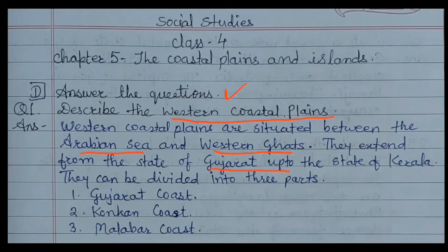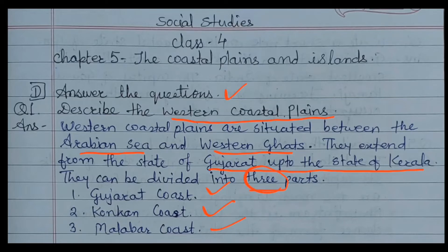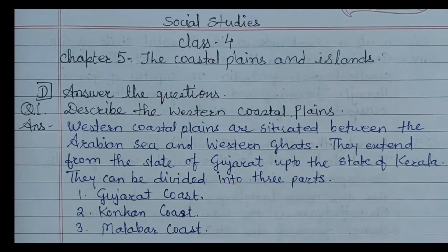The western coastal plains extend from Gujarat up to Kerala and can be divided into three parts: the Gujarat coast, the Konkan coast, and the Malabar coast. The Gujarat coast lies in Gujarat. The Konkan coast is the coastal area of Maharashtra and Goa. The coastal region of Kerala is known as the Malabar coast. You can write this answer in three or four lines.